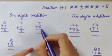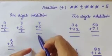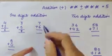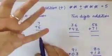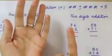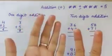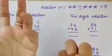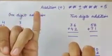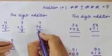Now try this one: 7 plus 6. So how many fingers will we open? We will open 7 fingers: 1, 2, 3, 4, 5, 6 and 7. The other number is 6, so we will count on after 6: 7, 8, 9, 10, 11, 12, 13. So what is the answer? The answer is 13.